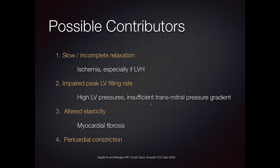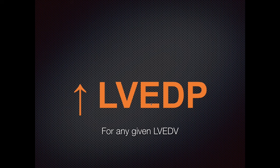Now let's talk about diastolic dysfunction. Lots of things can cause this — either because the left ventricle's relaxation is slow or incomplete, which we can see in ischemia, especially in LVH, when it's harder to relax all that muscle. We can also see this if the left ventricle pressures are high or if there's insufficient transmitral pressure gradient. Alternatively, you can see this when the ventricle's elasticity is damaged, such as in fibrosis or infiltrative heart diseases. And lastly, we can see this in pericardial constriction, such as constrictive pericarditis. Irrespective of the cause, the common end result is an elevated left ventricular end diastolic pressure — elevated LVEDP relative to the LV end diastolic volume.